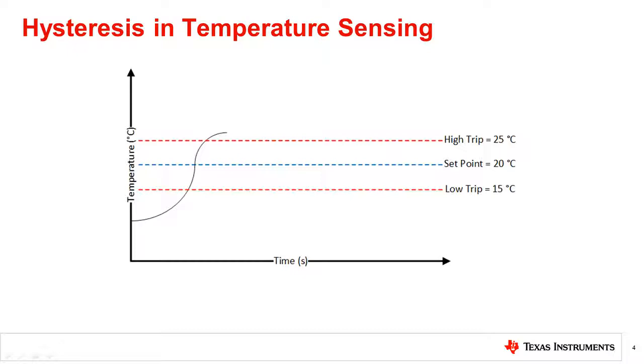When the room temperature is below the low trip point of 15 degrees Celsius, the heater switches on. When the room temperature rises above the high trip point of 25 degrees Celsius, the heater switches off.